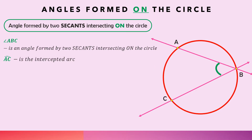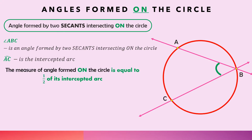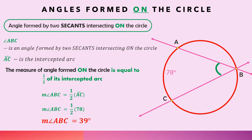The measure of an angle formed on the circle is equal to one half of its intercepted arc. So the measure of angle ABC equals one half of arc AC. For example, if arc AC is 78 degrees, then the measure of angle ABC equals one half of 78 degrees, which gives 39 degrees.